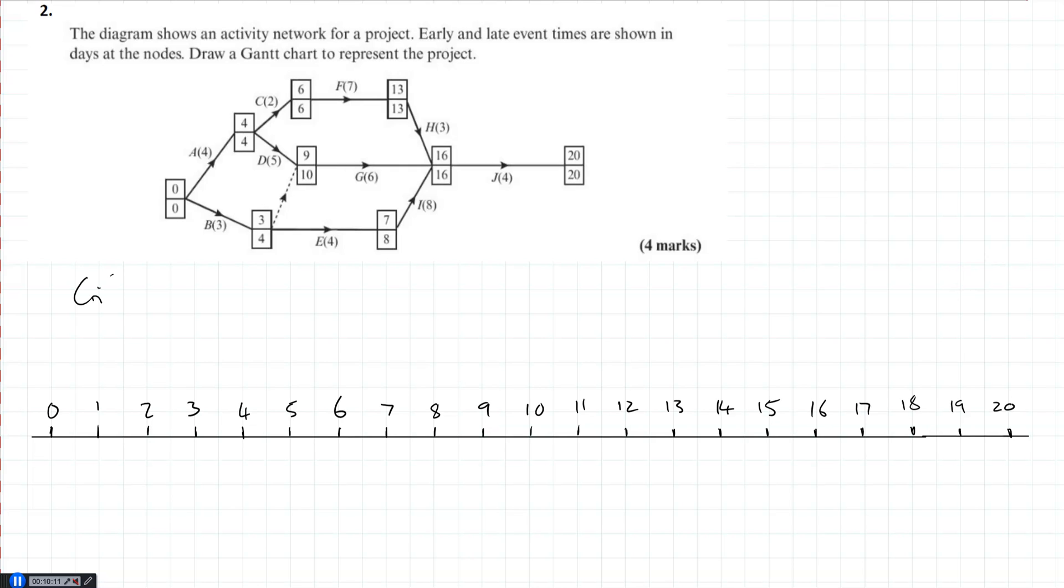So let's find our critical activities. So A. B is not. C is. D is not. E is not. F is. G is not. H is. I is not. J is. So hopefully you're getting a bit more confident and slightly quicker. And then our path is indeed the same. So we go from A to C to F to H to J. That's the only critical path. So that's going to go right along the top of our Gantt diagram.